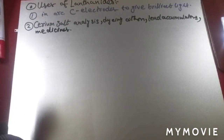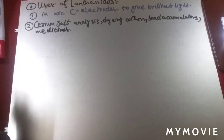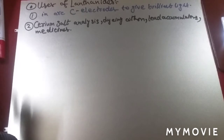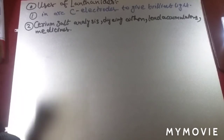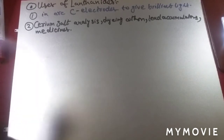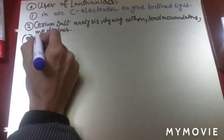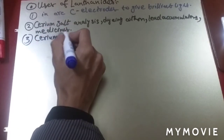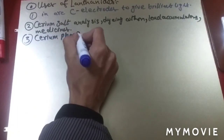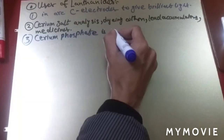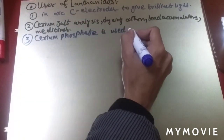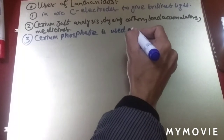Cerium phosphate is used as a catalyst in petroleum cracking.